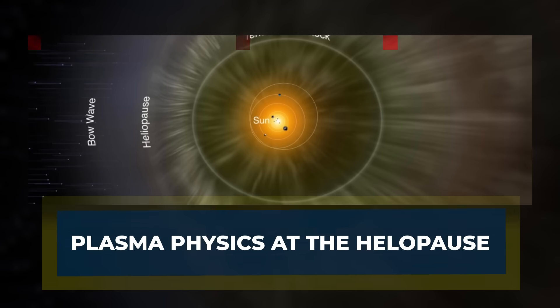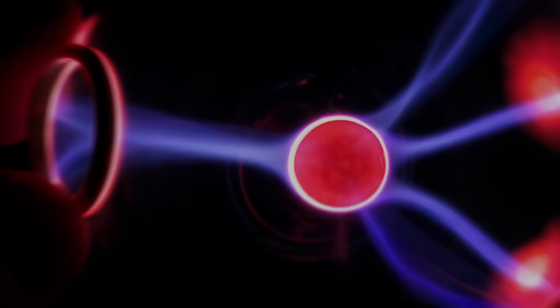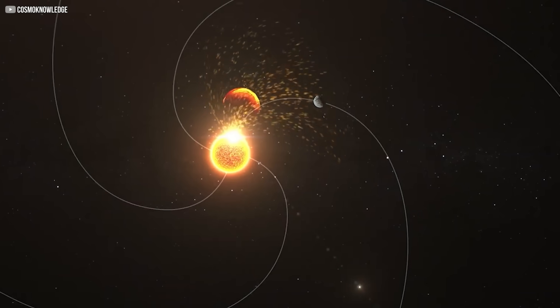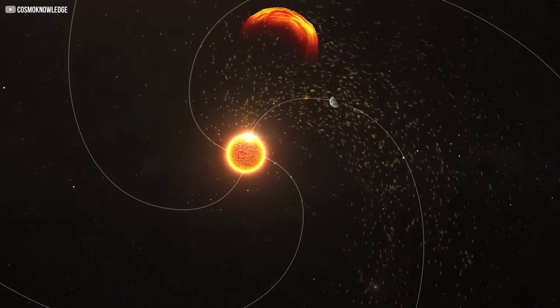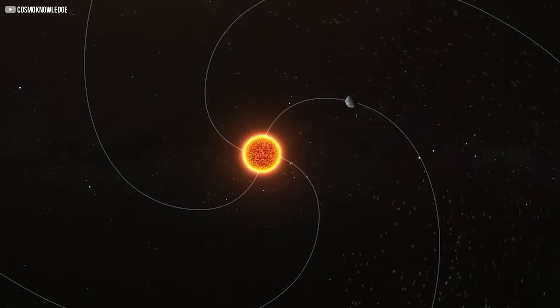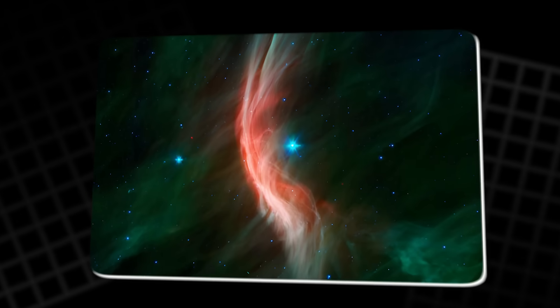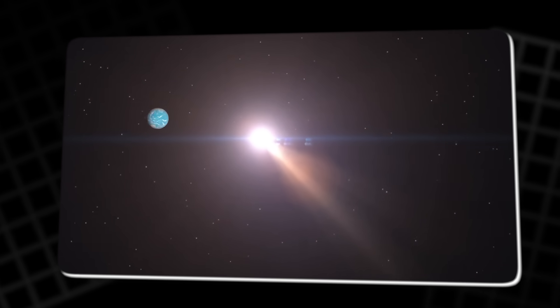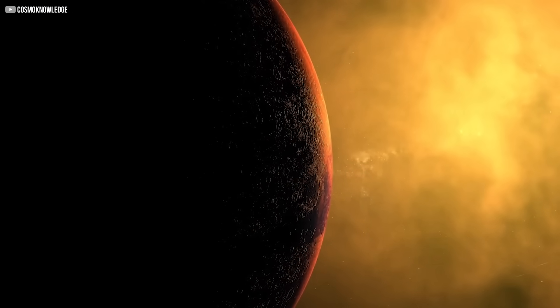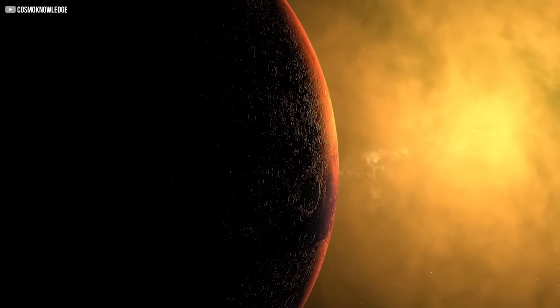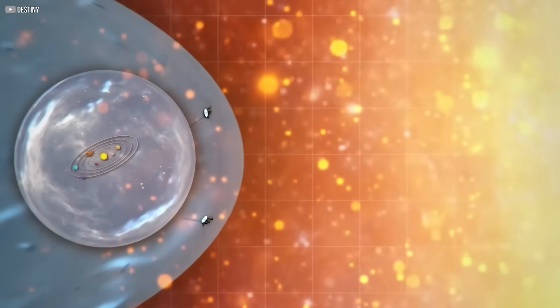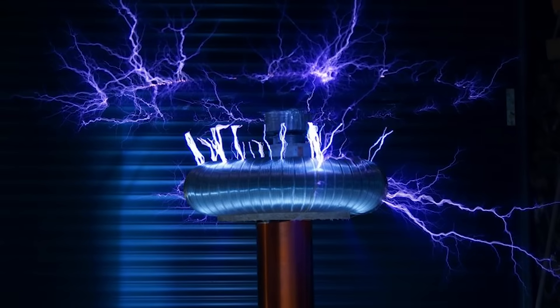The surprising heat at the heliopause can be explained through the principles of plasma physics. At this boundary, the solar wind, composed of charged particles, collides with the interstellar medium. Since there is no air or matter in the traditional sense to facilitate heat transfer, the energy at the heliopause doesn't come from thermal conduction, as we might expect. Instead, the heat is generated by the interaction of charged particles through electromagnetic forces.